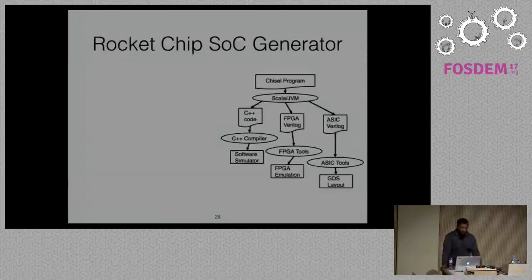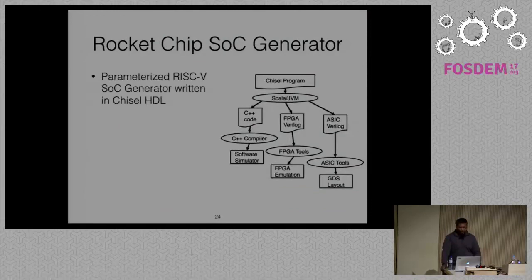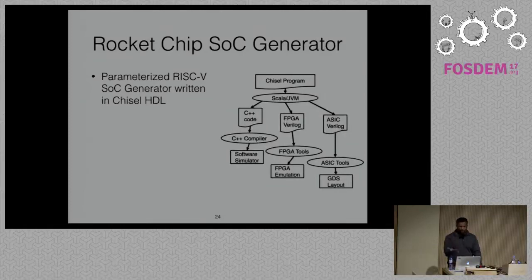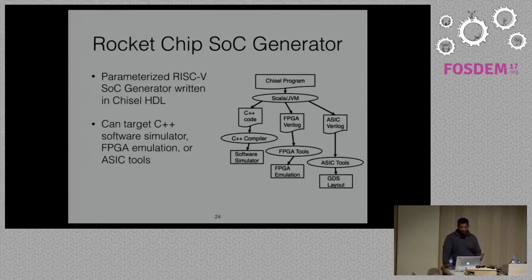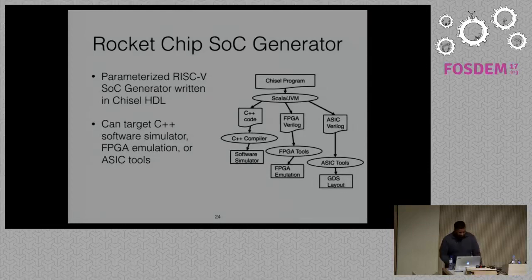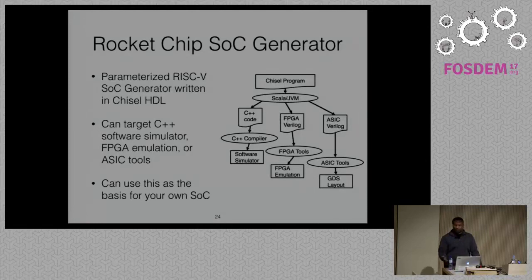The Rocket Chip SOC generator is written in the Chisel HDL — an embedded Scala DSL from Berkeley that both Berkeley and SiFive use for all their cores. By using the Rocket generator in Chisel, you can target a few different backends: a C++ software simulator, an FPGA via Xilinx tools, or ASIC tools like Synopsys or Cadence. The nice thing is that because it's parameterized and designed for customization, you can use it as the basis for your SOC — it's all open source, and you can tailor it to your application.